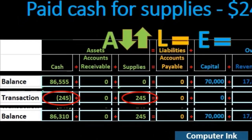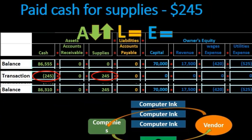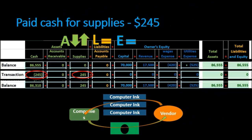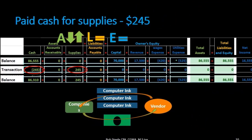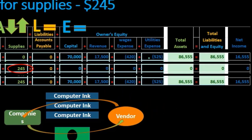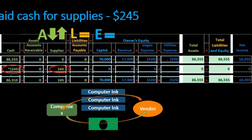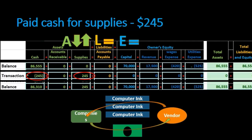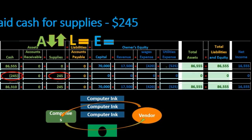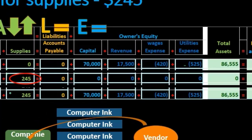This is one reason debits and credits are often a better tool than the accounting equation — we will see a debit and a credit for each transaction. Now for the totals: beginning balance, the transaction, and the new balance. Note that a utilities expense of $525 was recorded in a separate transaction in between, so the numbers reflect that additional entry.